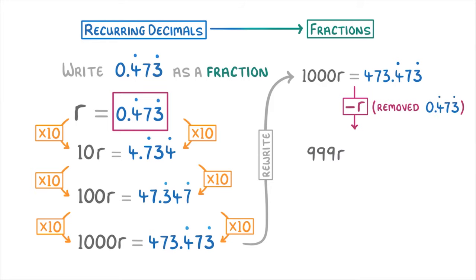And because we only have whole numbers in this equation now, to get a single r by itself all we have to do is divide both sides by 999.